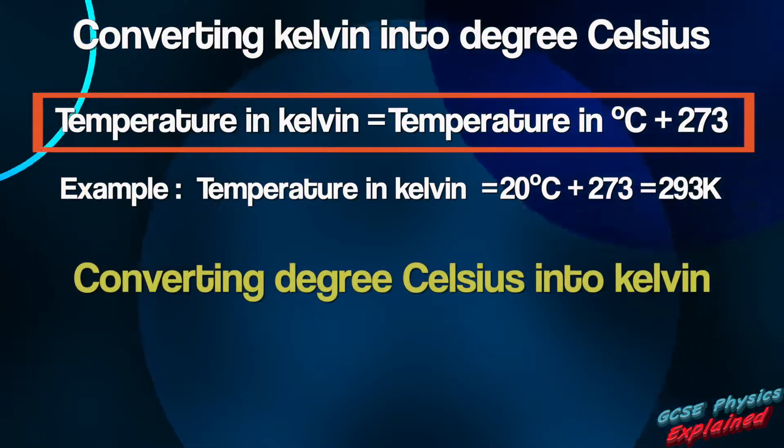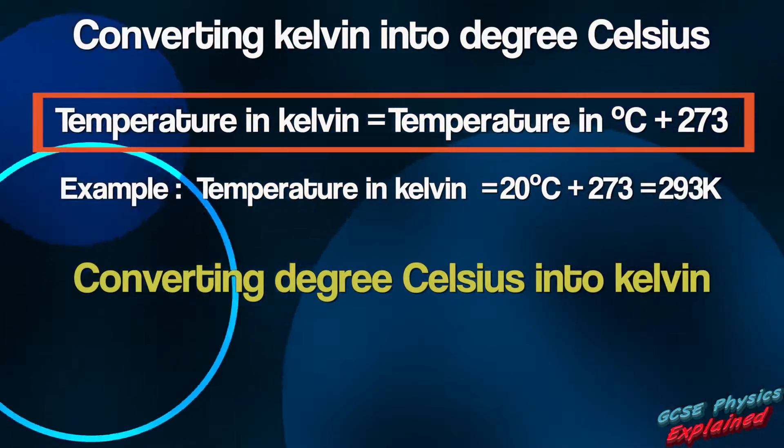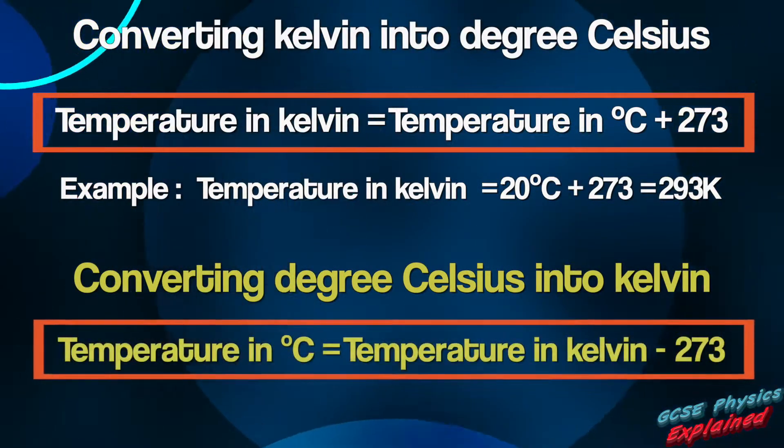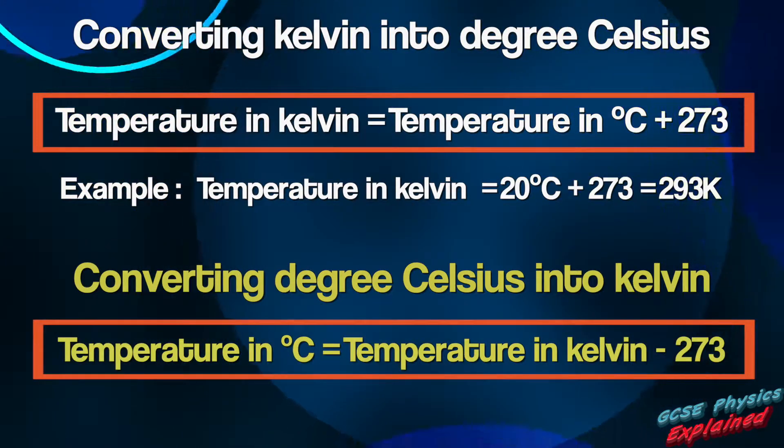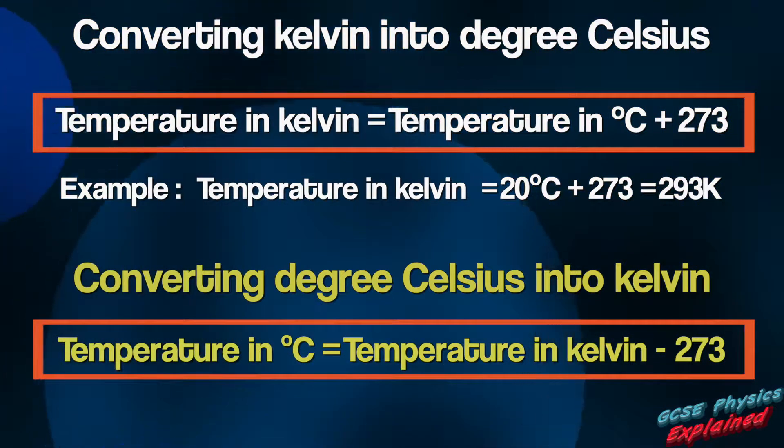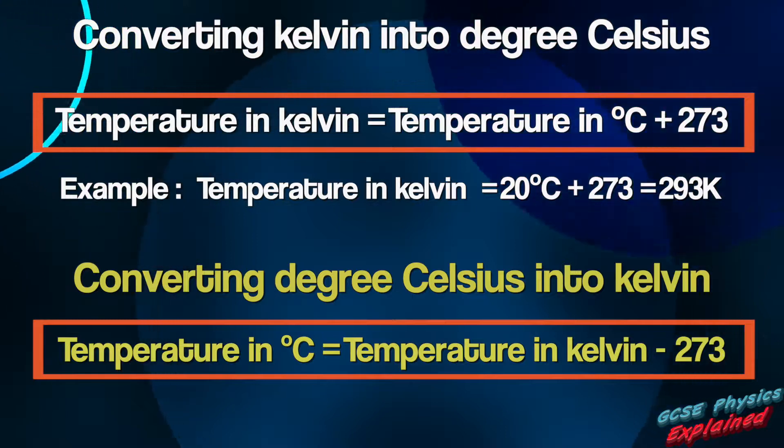And here's how to convert degrees Celsius into Kelvin: temperature in degree C equals temperature in Kelvin take away 273. And here's an example.